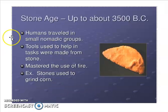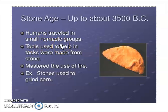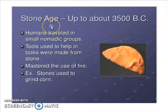Let's start with the first age of the agricultural era, which started about 3500 BC. Humans traveled in small nomadic groups. People before were traveling in small groups, usually migrating because they wanted to find food and good shelter for their families or clan. So they invented tools to survive, and most of the tools made before were made of stone — that's why they call this age the Stone Age.